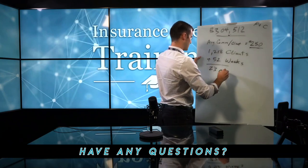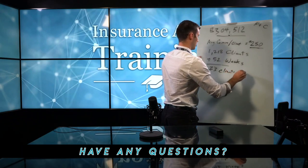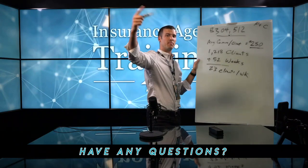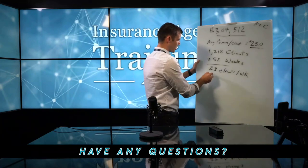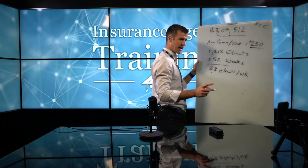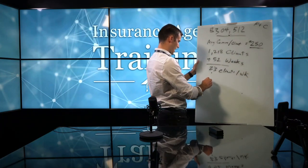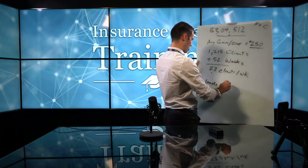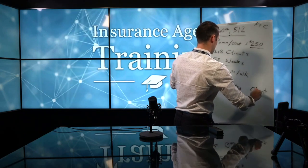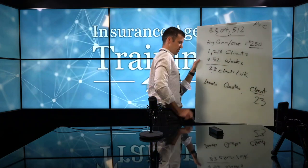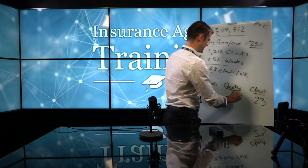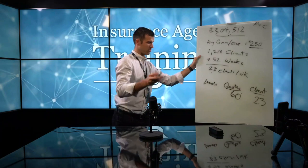You need 23 clients per week. For a P&C agent, we look at quotes. Brandon's independent, so I'm going to go further and give you some real math. 23 clients per week — to end up at 23 clients, I'm going to look at leads to quotes to clients. If you want to get to 23 clients per week, he would need to quote about 60. That's kind of a safe number.